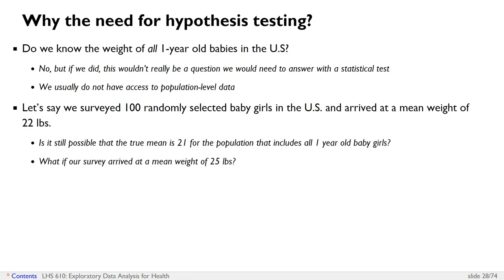And what if our survey had arrived at a mean weight of 25? Is it possible for the population to have a mean weight of 21? You can imagine that as the difference between what we find in our sample and what we expect in the population gets larger and larger, it becomes increasingly unlikely that the fact we want to test is actually true.